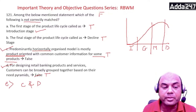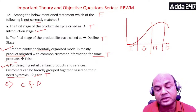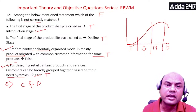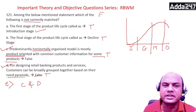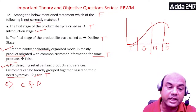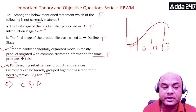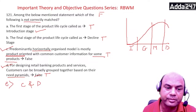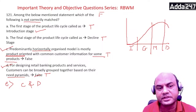The need pyramid refers to Maslow's hierarchy: physiological, safety, social, esteem, and self-actualization. Customers are grouped as per these physiological levels, so the need pyramid grouping statement is true.